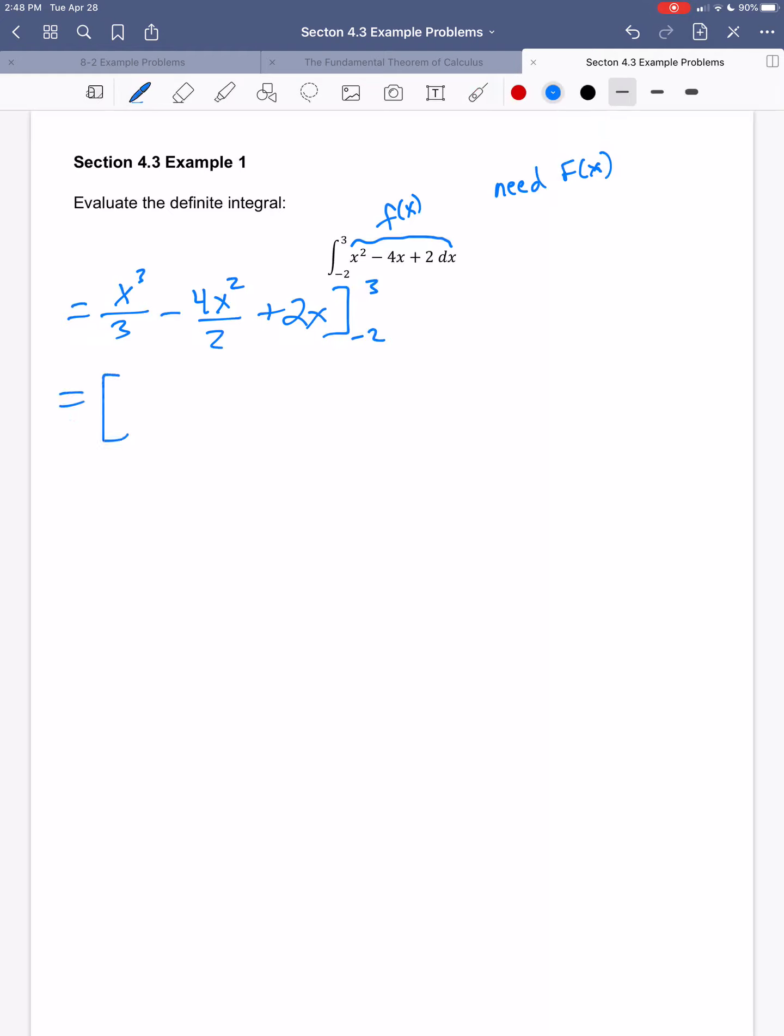So if I plug in 3, I get 3 cubed over 3, minus 4 times 3 squared over 2, plus 2 times 3, minus, and now I plug in negative 2. So I get negative 2 to the third power over 3, minus 4 times negative 2 squared over 2, plus 2 times negative 2.